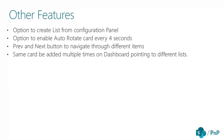Additional features include the ability to create the SharePoint list directly from the configuration panel — you don't have to manually pre-create it. There's an option to enable auto-rotate every four seconds, configurable in the card properties. There are also previous and next buttons to navigate between items, and the same card can be added multiple times on the dashboard pointing to different lists, since the list name is configurable in the web part properties.